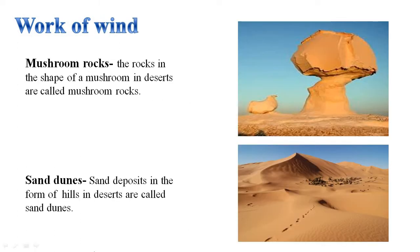Work of Wind. Have you ever visited a desert? There you might have seen many kinds of structures formed in deserts. In desert areas, winds act as an agent of erosion. Mushroom rocks: rocks in the shape of a mushroom in deserts are called mushroom rocks. Sand dunes: when the wind blows, it lifts and transports sand from one place to another. When it stops blowing, the sand falls and gets deposited in low hill-like structures called sand dunes.